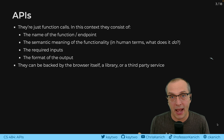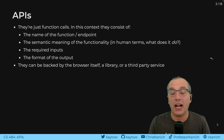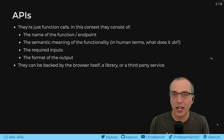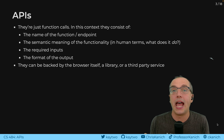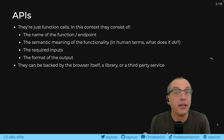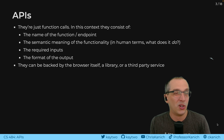Having all of these as well-defined pieces of information defines an API for us. These APIs can be backed by the browser itself, by a library, or by a third-party service. While I'm going to be talking about this within the browser context, you can just as easily access an API from a server context — anywhere that you have the ability to make HTTP requests, which is basically everywhere.